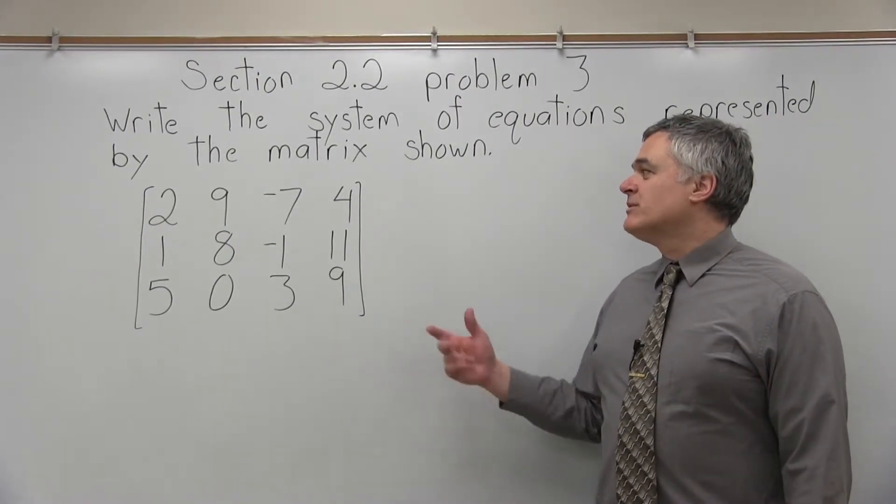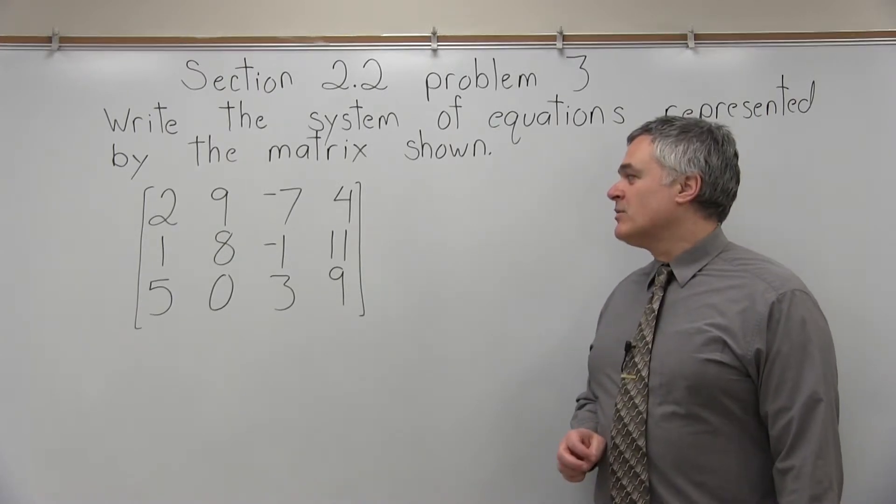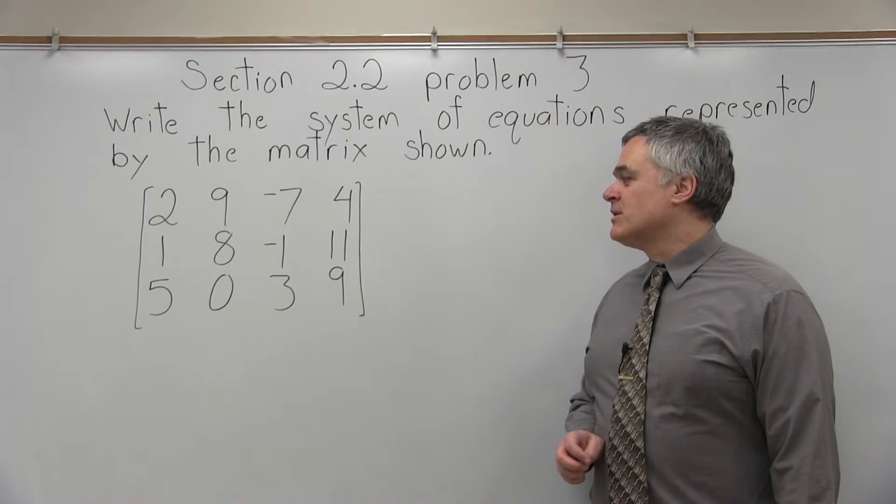This matrix has three rows. We have 2, 9, negative 7, 4 across the top; 1, 8, negative 1, 11 in the middle; and 5, 0, 3, 9 in the bottom row.